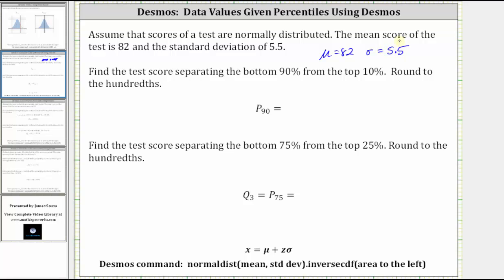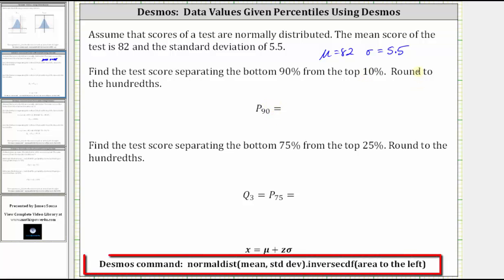We're asked to find the test score separating the bottom 90% from the top 10%, which would be the 90th percentile indicated by P sub 90. We're told to round to the hundredths place value.